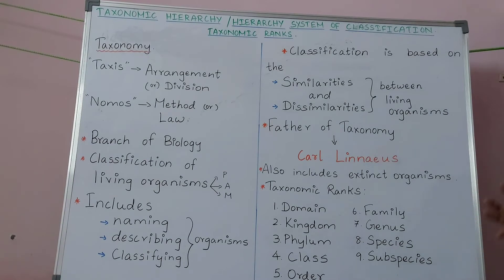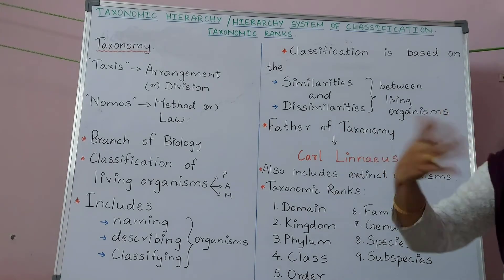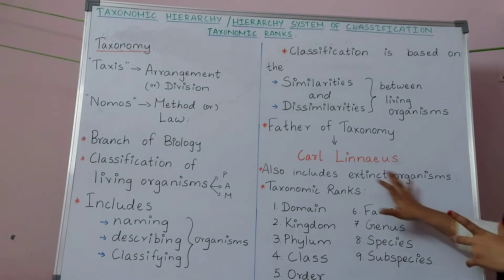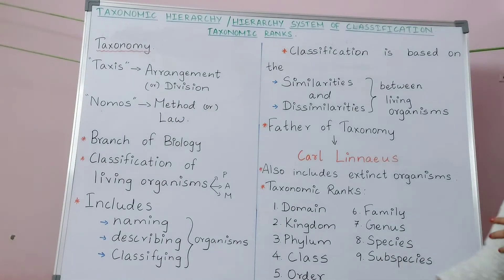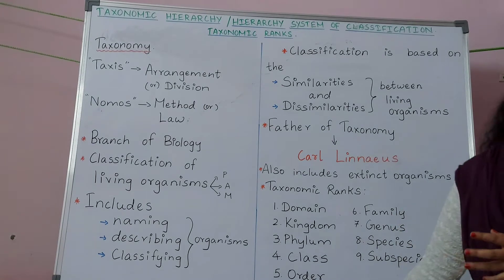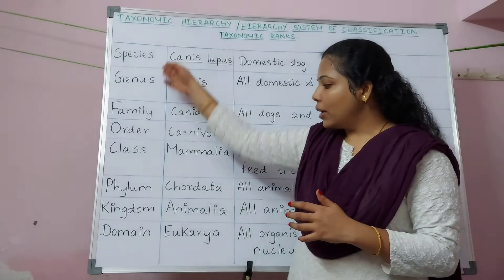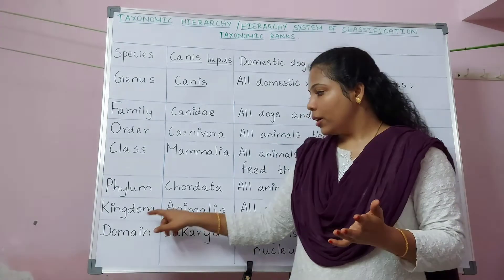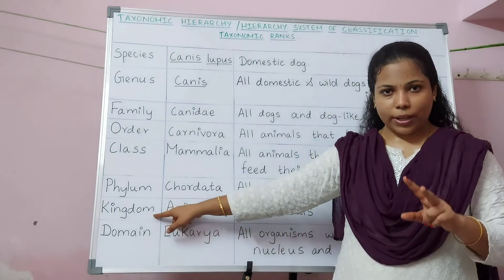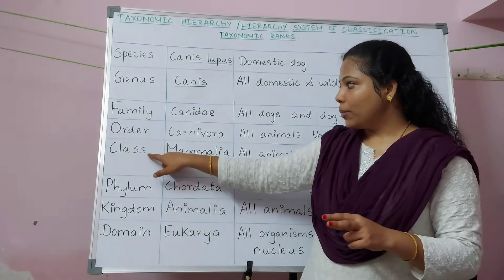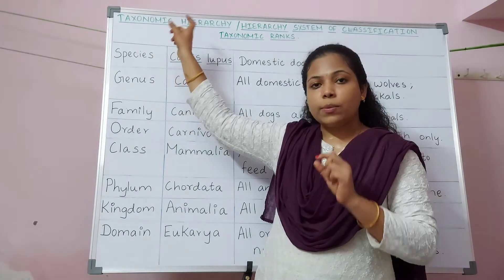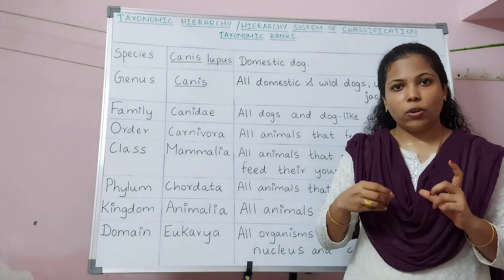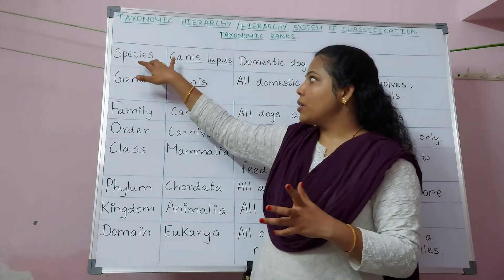I'll show you an example for this taxonomic rank so we can understand it in more detail. These are the eight taxonomic ranks: domain is the highest, followed by kingdom, phylum, class, order, family, genus, and species. Species is not the lowest taxonomic rank — we also have subspecies, which comes under the species category.